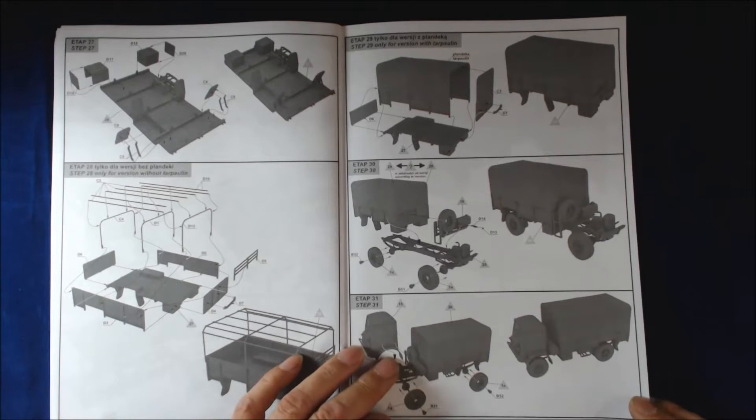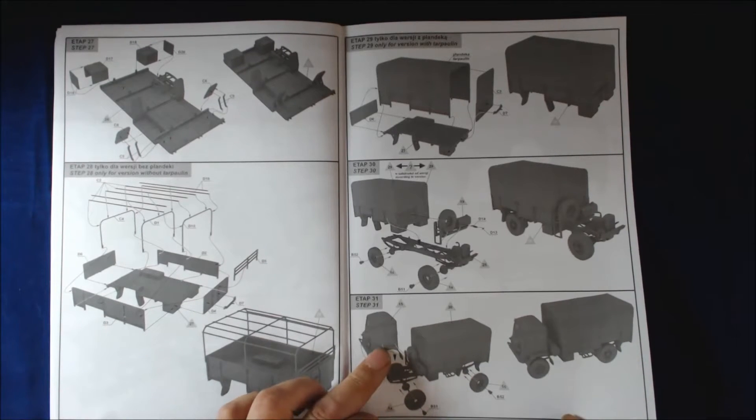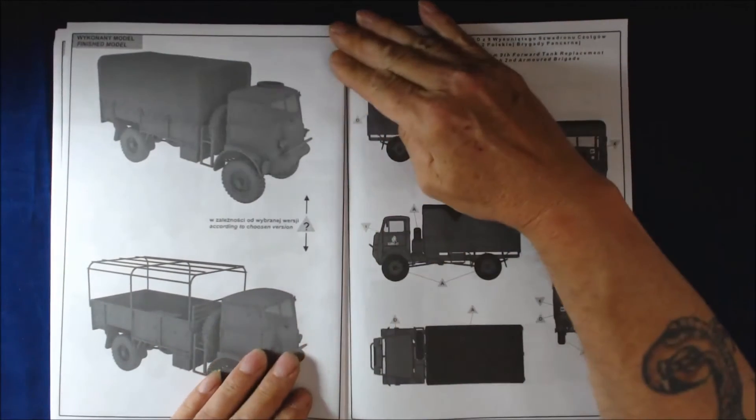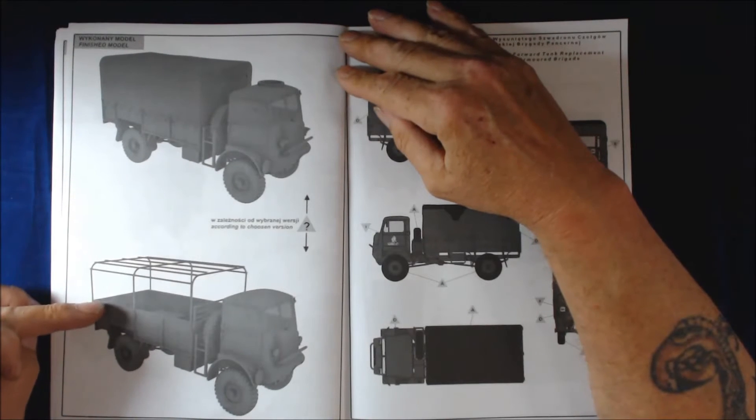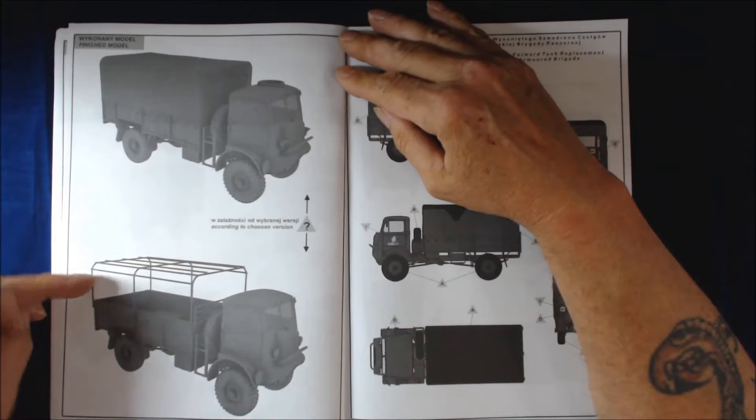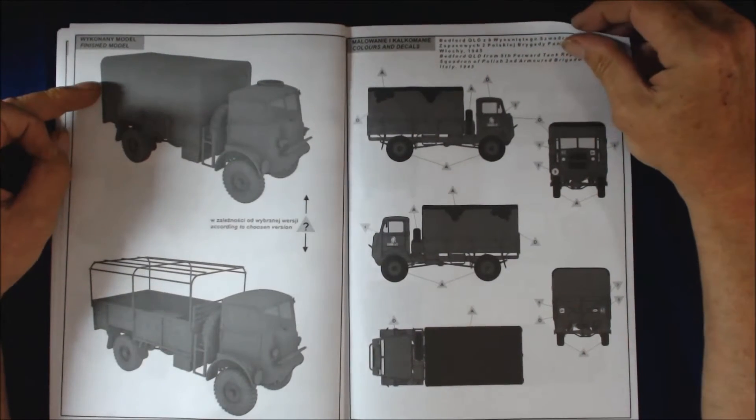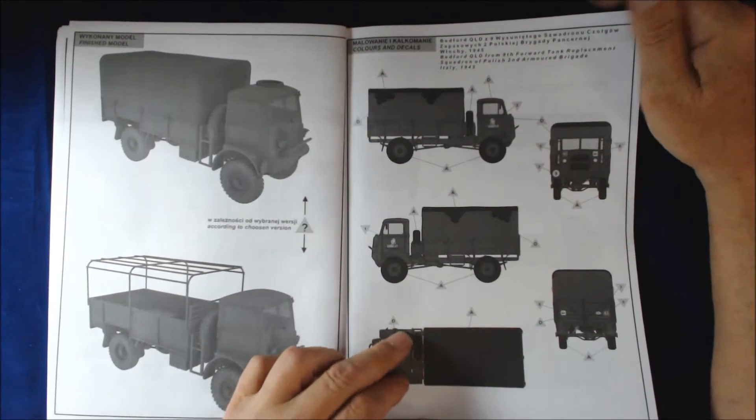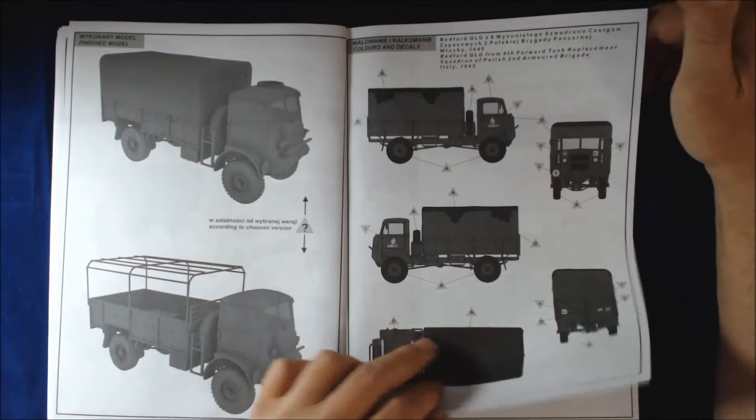I had a little tiny bit of a fit issue when I went to bring the cab in, but a sanding stick and a little round file just to take a corner off, no big dramas. Showing you here what it looks like without the cover. I prefer it without, I just think it looks better.